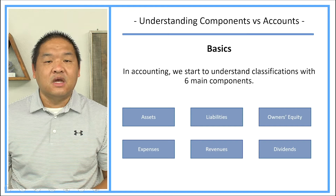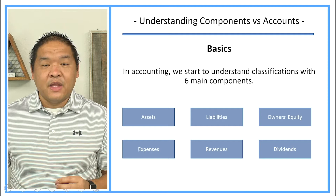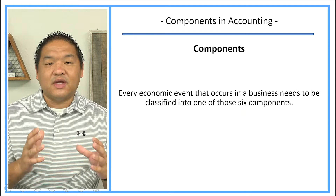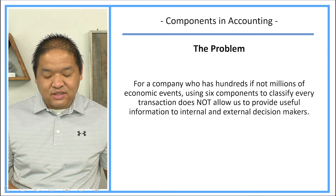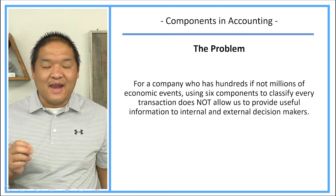In accounting, we start to understand classifications with six main components: we've got assets, liabilities, owner's equity, expenses, revenues, and dividends. Those are our six components. And every economic event that occurs in a business needs to be classified into one of those six components. So if we have an economic event or a transaction, we need to be able to classify it into one of those six components.